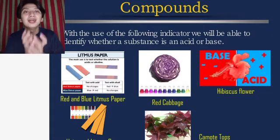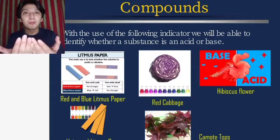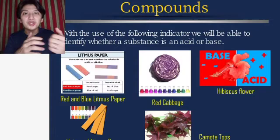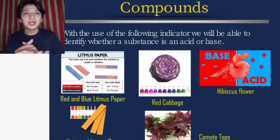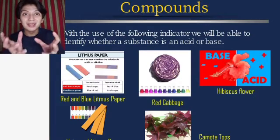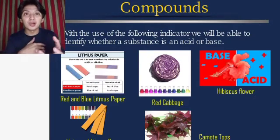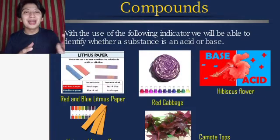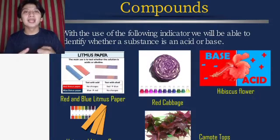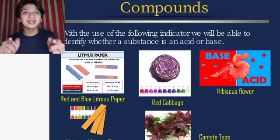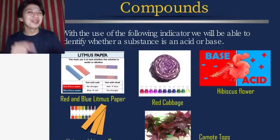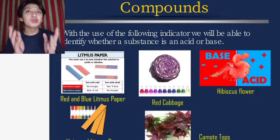Red cabbage — called pulang repolio in Filipino — can also be used as an indicator. You can blend it or boil it to extract its color. Camote tops — talbos ng camote — the red variety, and hibiscus flower, or gumamela, can also be used. You extract the color from the flower and use it as an indicator. We will experiment with acids and bases to see the different colors they produce.